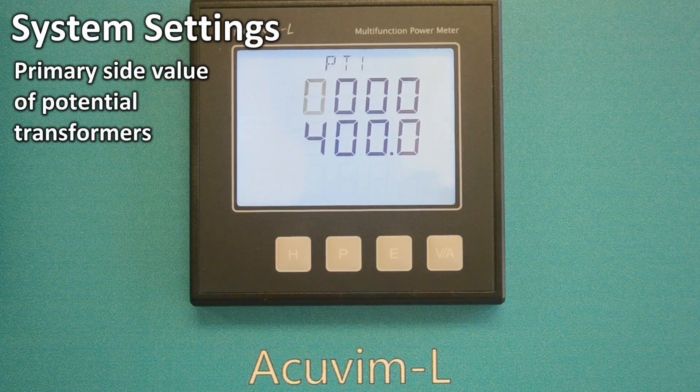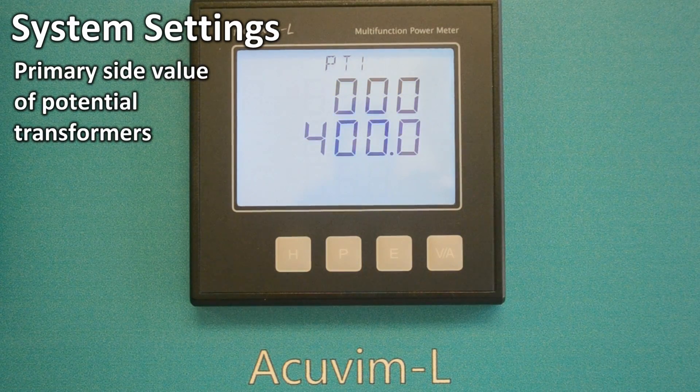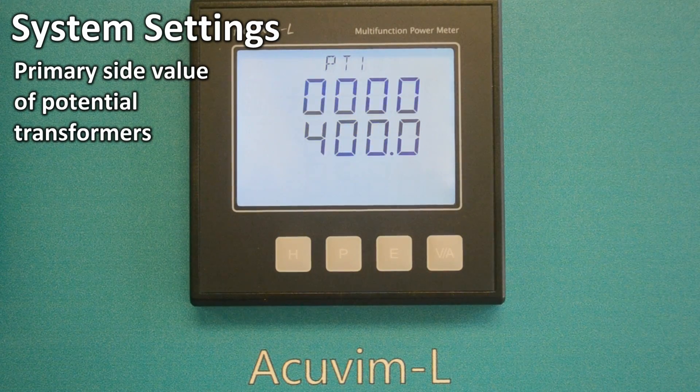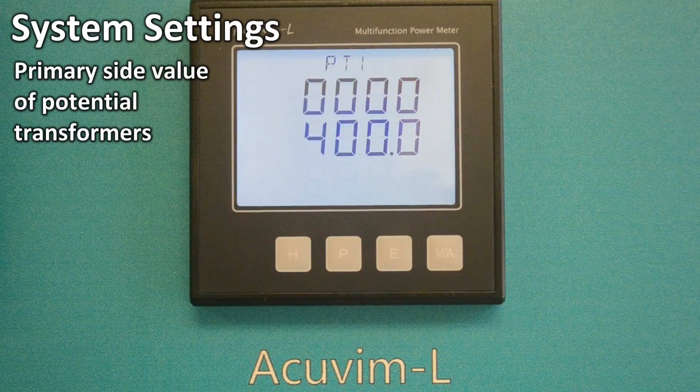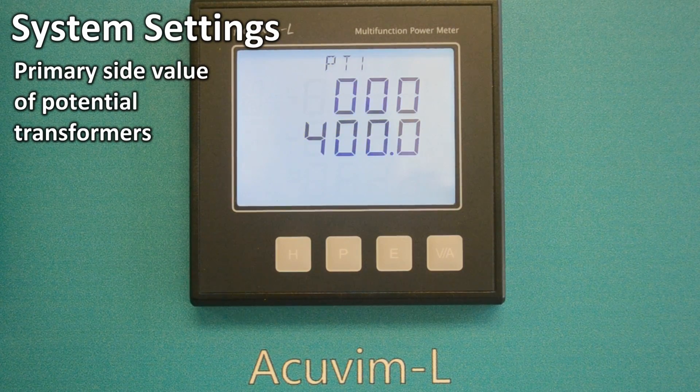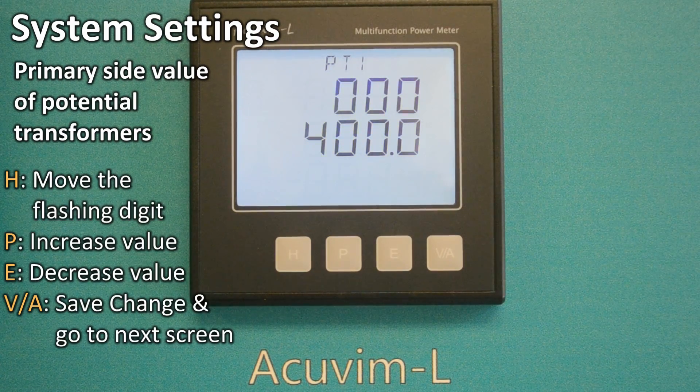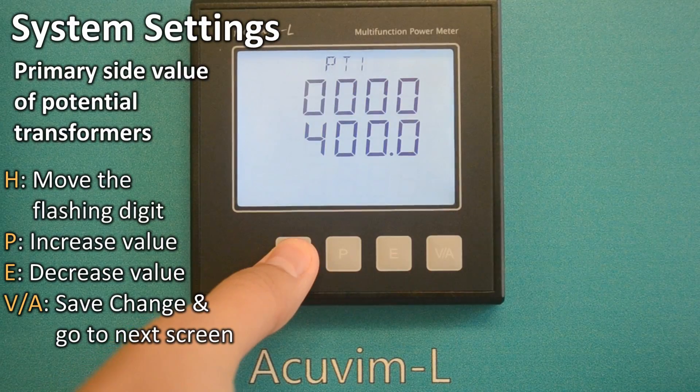PT1 400V means the primary side value of the potential transformer. For example, if a 4200 to 120 volt transformer is used, PT1 should be 4200V.